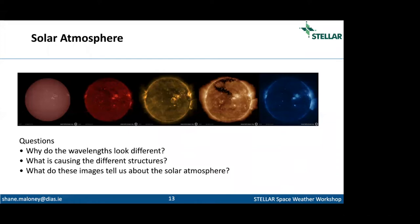Some questions we need to answer: why do the wavelengths look so different? What's causing the structures we see in certain wavelengths and how do they relate to each other? And if we just had these images and nothing else, what do they tell us about the solar atmosphere?